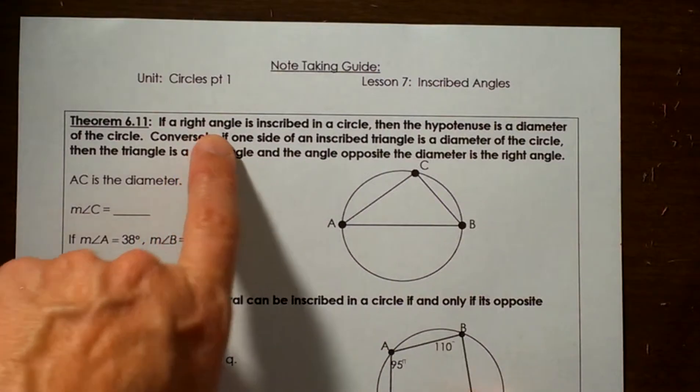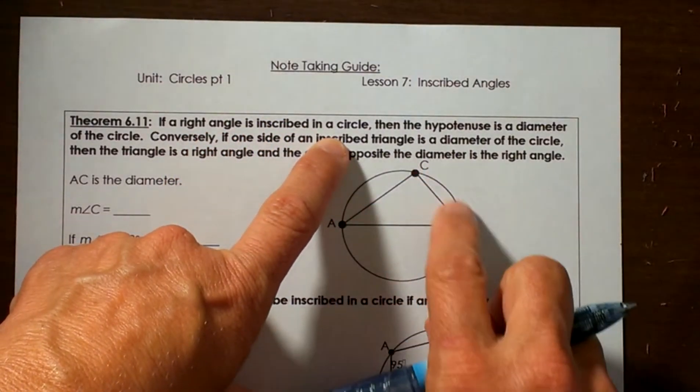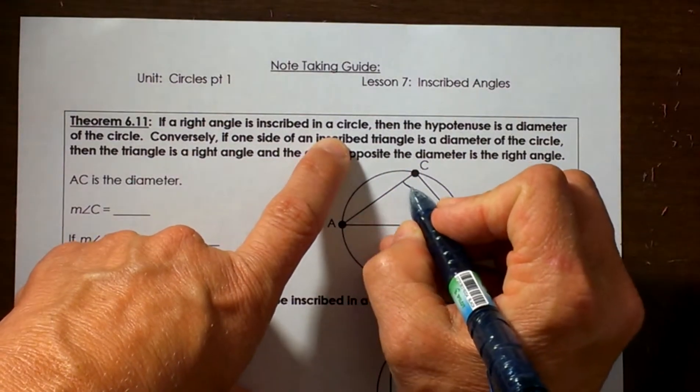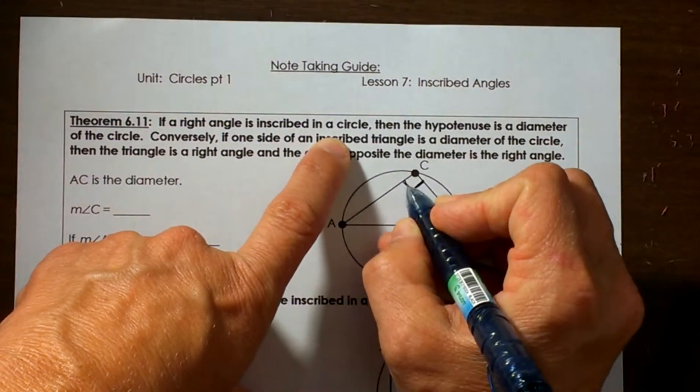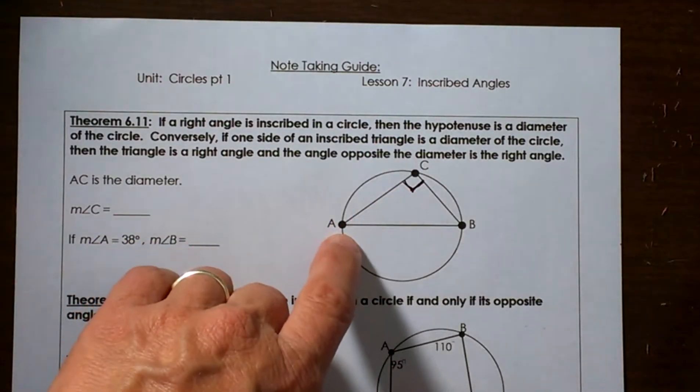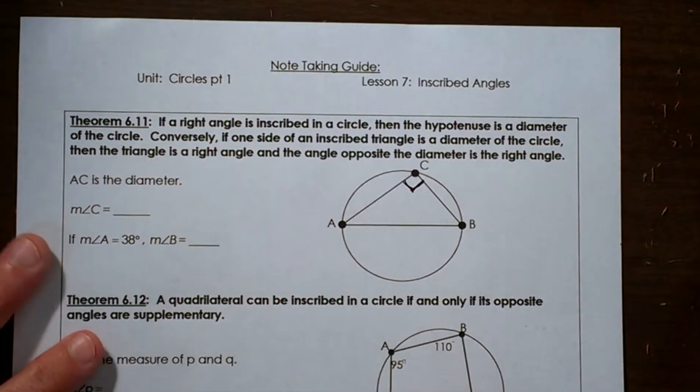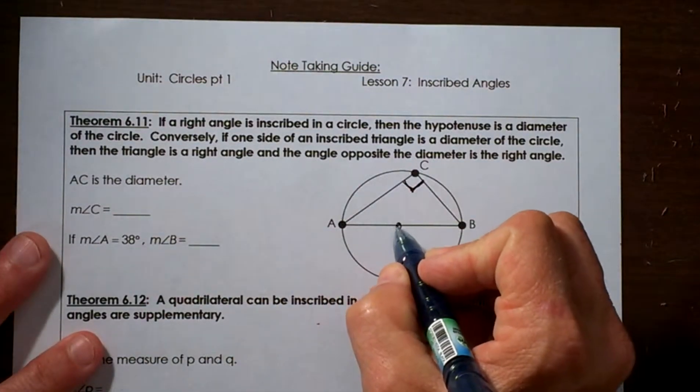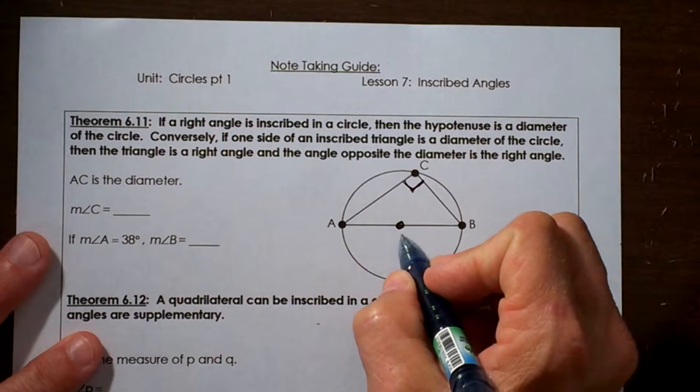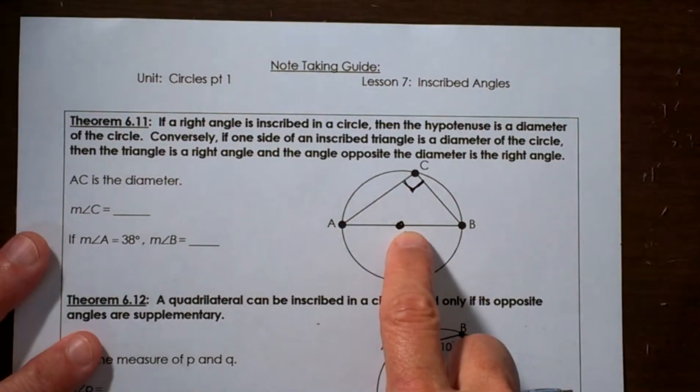If a right angle is inscribed in a circle, so we've got a right angle inscribed in a circle, let's call this angle C the right angle. Then the hypotenuse, well the hypotenuse is AB, is a diameter in the circle. A diameter goes through the center, so let's call this circle O, and that means the center of the circle is on that segment.